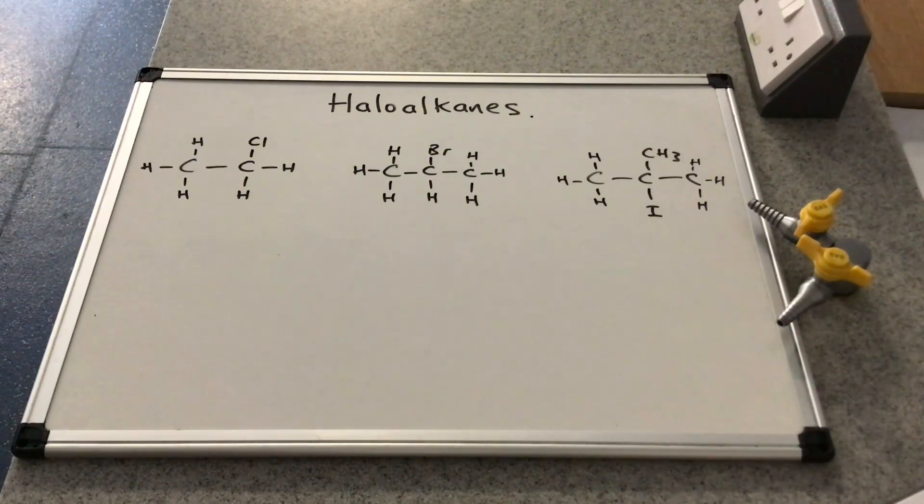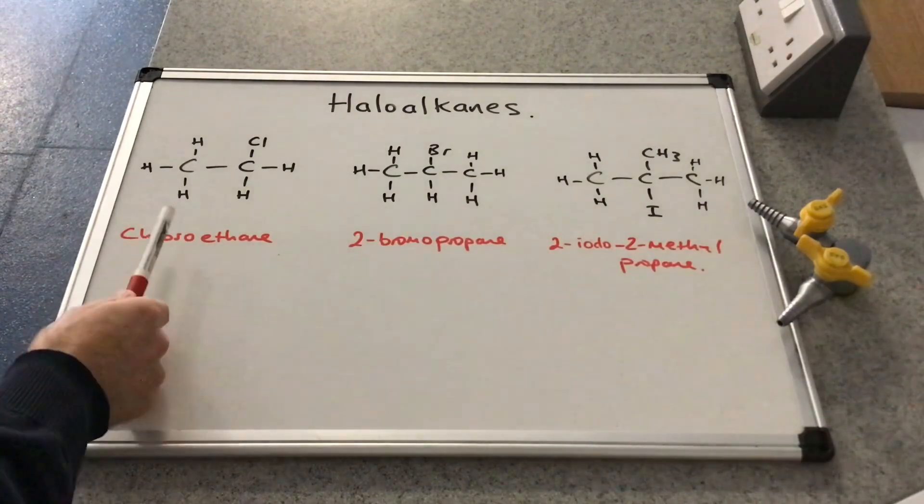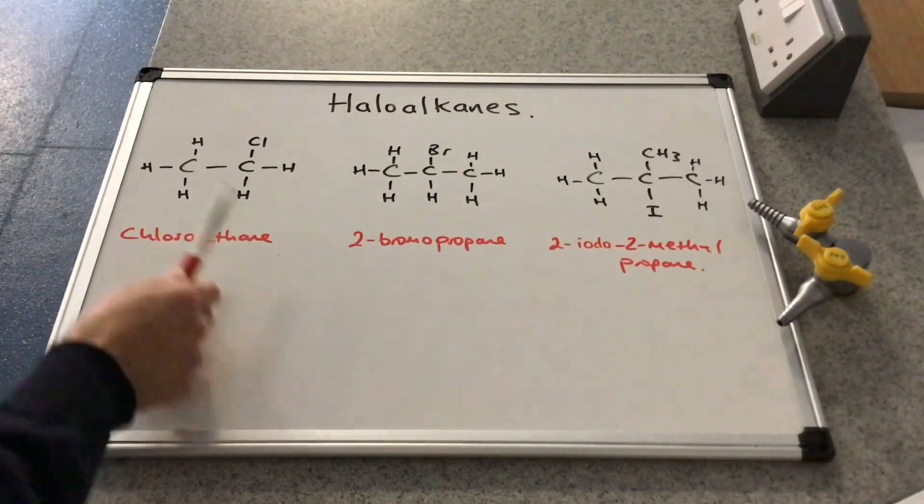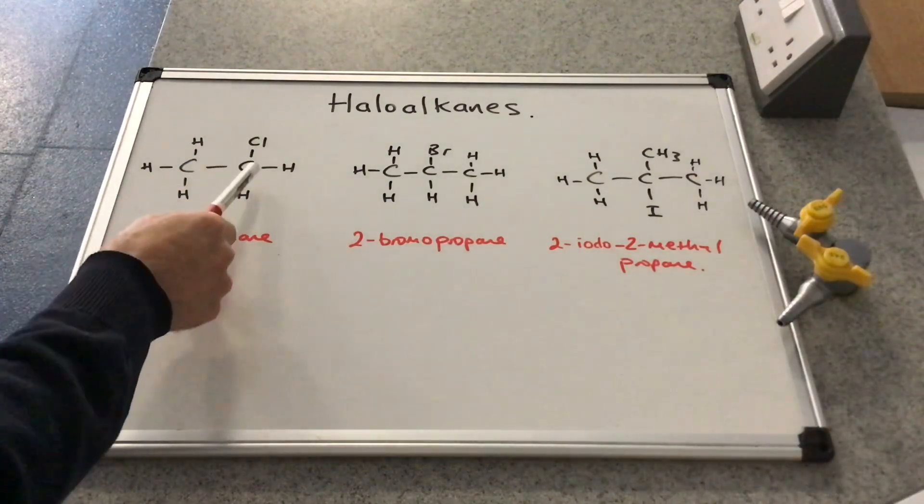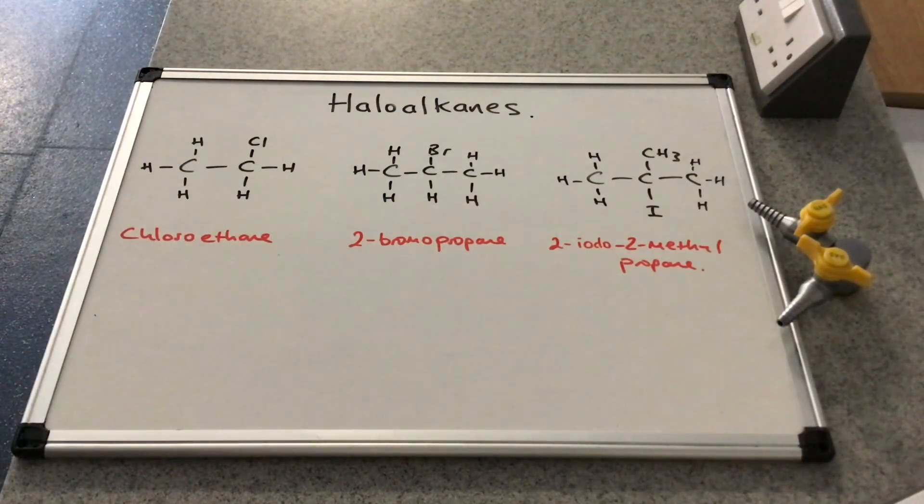In terms of naming, if you want to have a go at naming these, just pause the video and try yourselves and then play on for the answer. So on the left we've got chloroethane, so two carbons is the ethane part, chlorine on one of the carbons, so chloroethane.